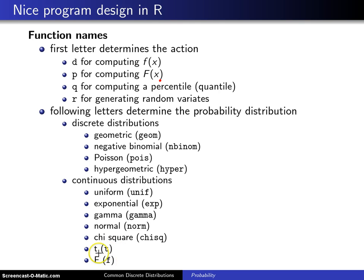There's also chisq for the chi-square distribution, and then the letters t and f for the t and F distributions. Again, these are just a sampling — R contains many more distributions than just those.